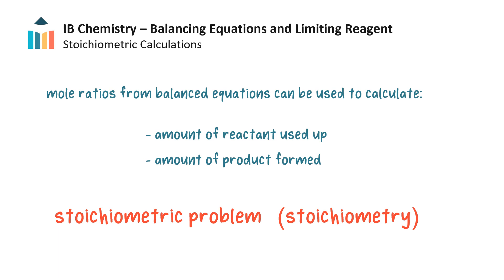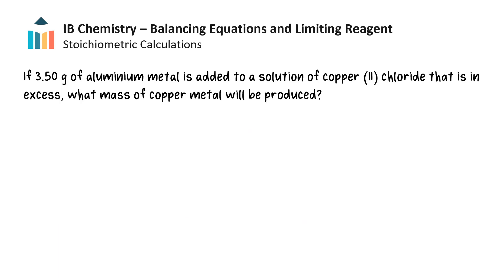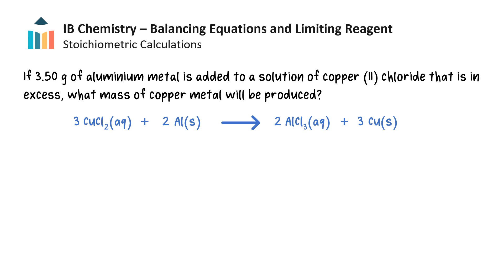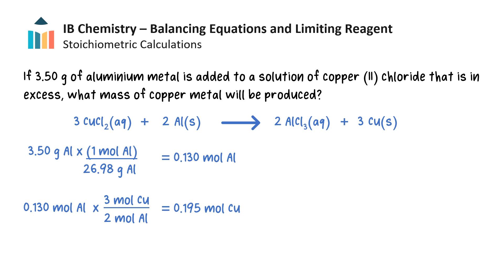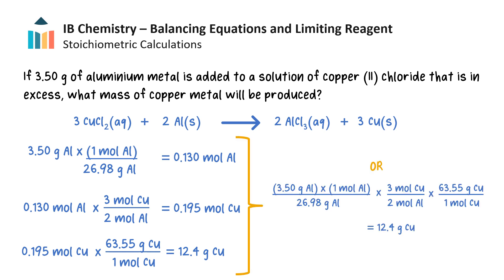Let's use a balanced equation from a previous slide in a stoichiometric problem. If 3.50 grams of aluminium metal is added to a solution of copper chloride that is in excess, what mass of copper metal will be produced? First, we need a balanced chemical equation. Then, the amount of aluminium metal is given in grams and must be converted to moles. The moles of aluminium consumed can be converted to moles of copper metal produced using the appropriate mole ratio from the balanced equation. Finally, the moles of copper can be converted back to grams if required, or we can combine these steps into a single expression. Notice that the mole ratio from the balanced equation allows a quantity of one substance to be converted to the corresponding quantity of another substance.